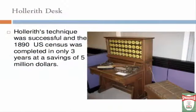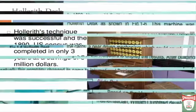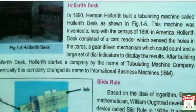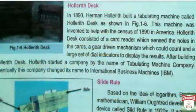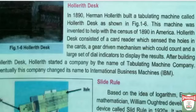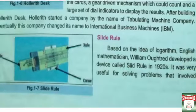Now we talk about the Hollerith Tabulating Machine. In 1890, Herman Hollerith built a tabulating machine called the Hollerith Deck, as shown in the figure. This machine was invented to help with the census of 1890 in America. It consisted of a card reader which sensed the holes in the cards and a gear-driven mechanism which could count, along with a large set of dial indicators to display the results. After building it, Hollerith started a company by the name of the Tabulating Machine Company.